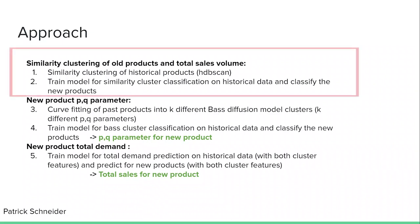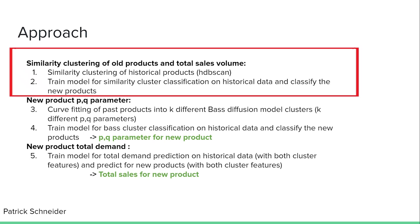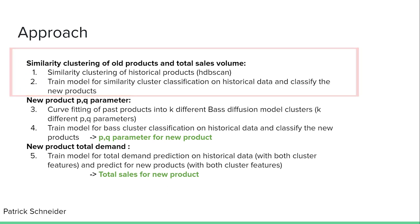We have a past sales record of old products. This record can help us to find similar old products for our new products. In the first step, we want to find similarities in the specific features of old products and their total sales volume. This was done with the HDBSCAN cluster algorithm, where we assign the old products to a similarity cluster. The old product information was then used to train a model for the classification of the similarity cluster.